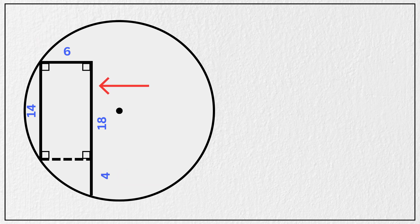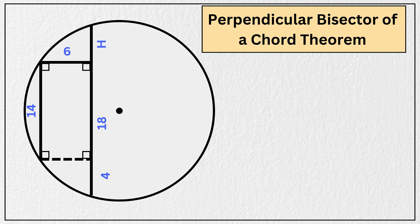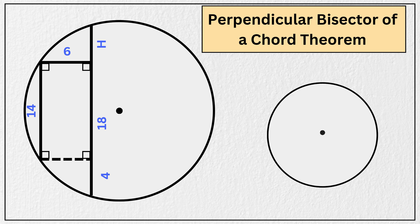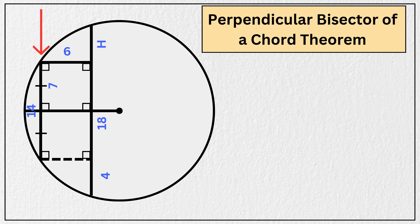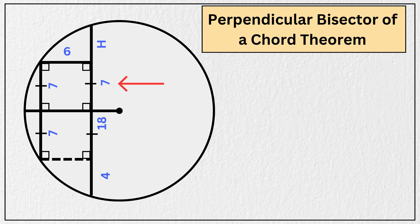Now extend this chord by drawing it all the way to the circle, and label this remaining vertical segment as h. According to the perpendicular bisector of a chord theorem, if you draw a perpendicular line from the center of a circle to its chord, it divides the chord into two equal halves. So let's draw a perpendicular line from the center to both chords. That means each side of this chord becomes 7 units. Since these lines are parallel and we have a right angle here, this side is also 7 units, and this side is also 7 units.